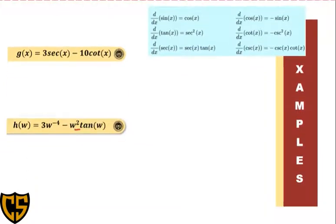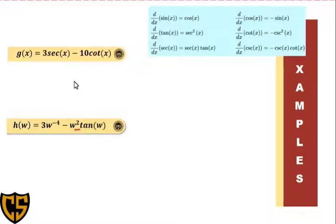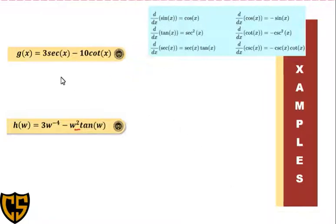Our first example will be g(x) = 3 sec(x) − 10 cot(x). If you are asked to find the derivative of this, we are still going to apply the basic rules of differentiation such as the constant rule, constant multiple rule, product rule, subtraction rule, and addition rule. This time, we are also going to integrate the formulas for the derivative of trigonometric functions.